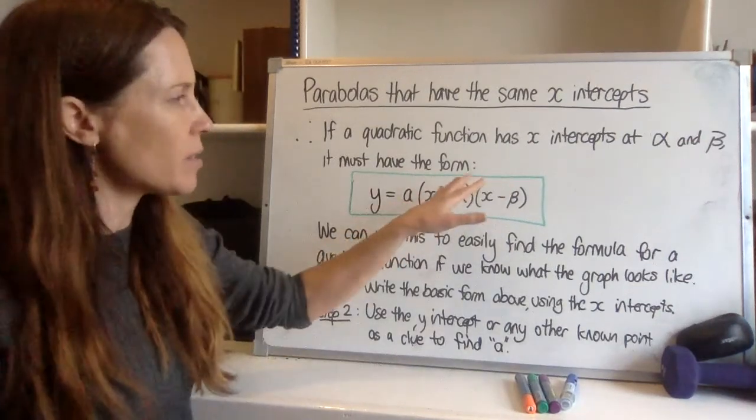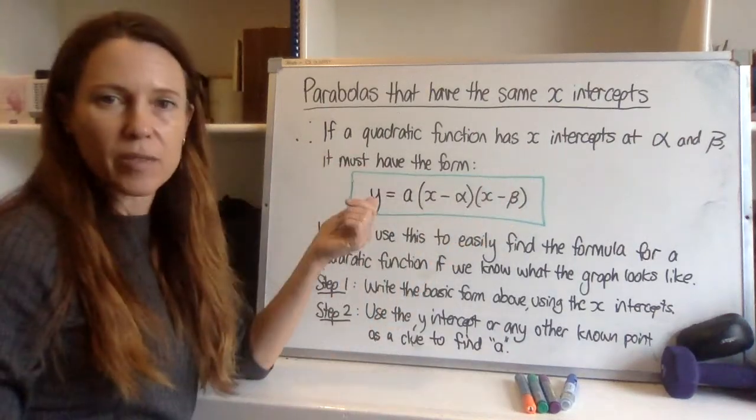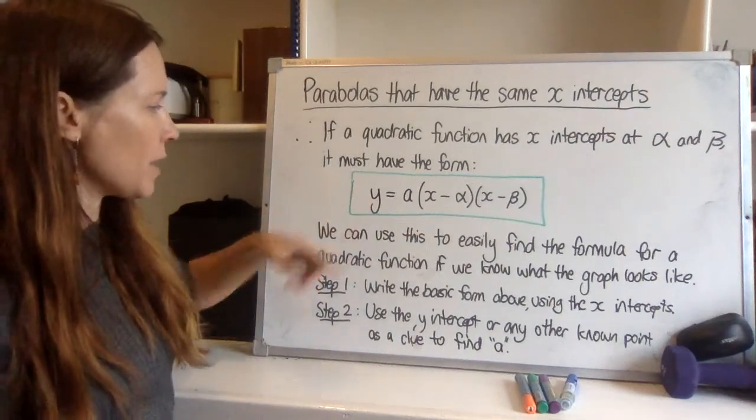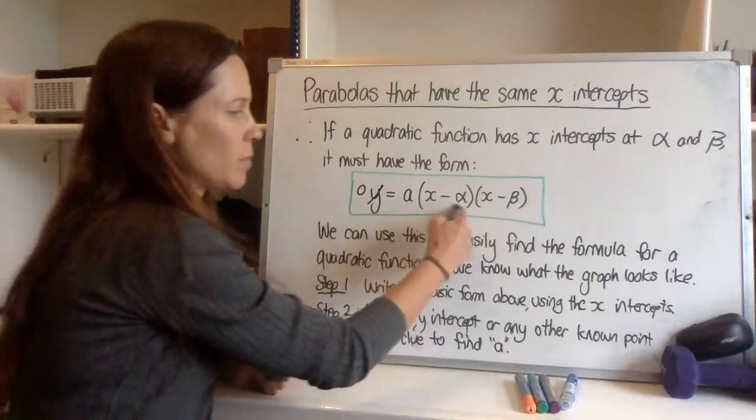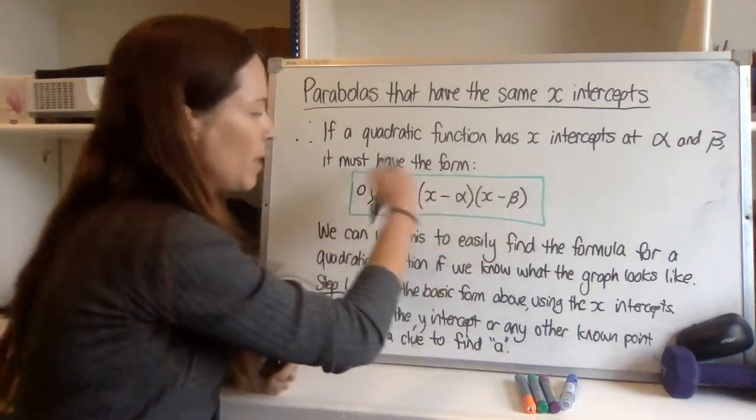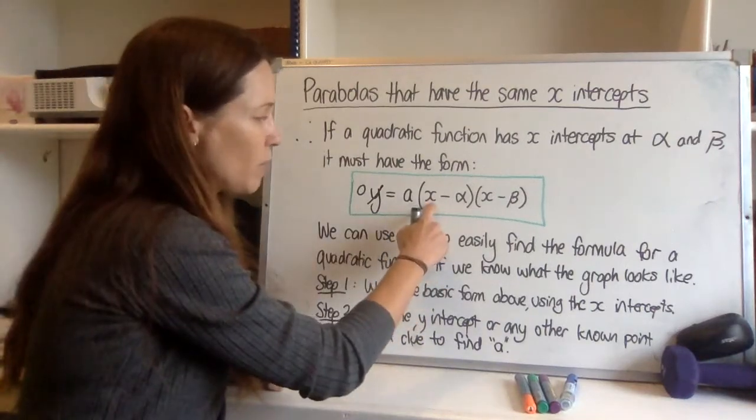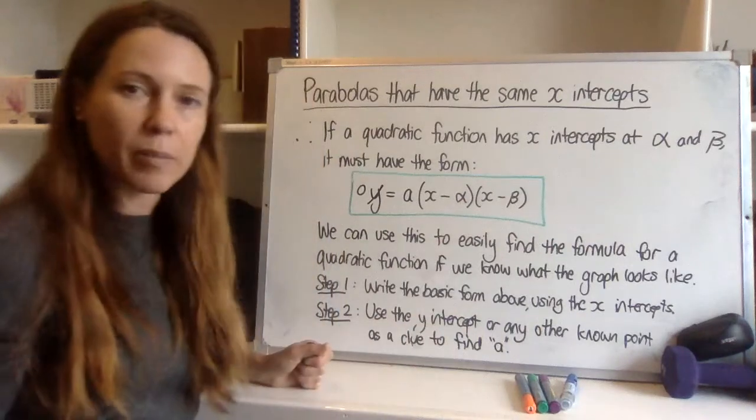Now how does this make sense? Well if you were to say I've got a quadratic function in this form and I want to know the x-intercepts, it makes sense that you'd let y equal zero, so you cross that out, let it equal zero and say if this times this times this equals zero, one of these three parts must have been zero. And for that to be true, the x would have to be alpha or beta, which is what we've defined them as being.